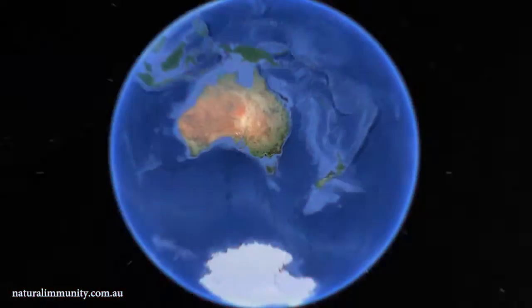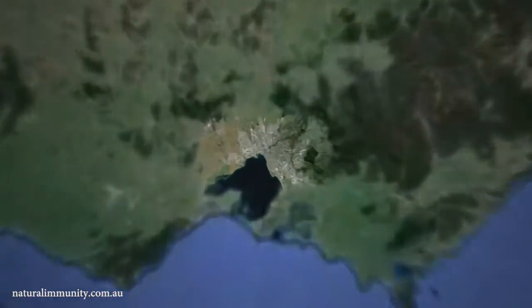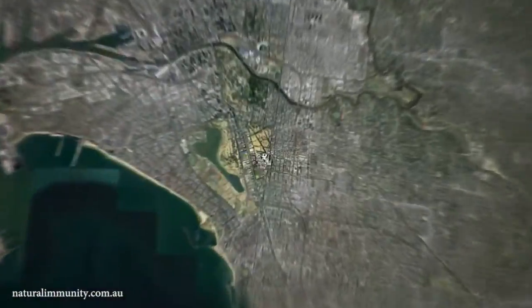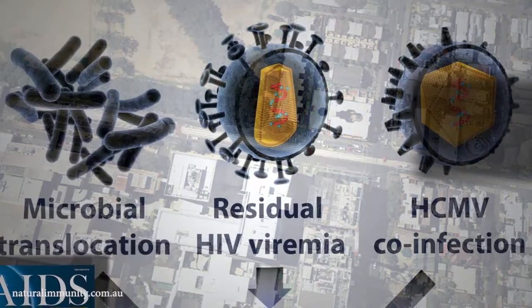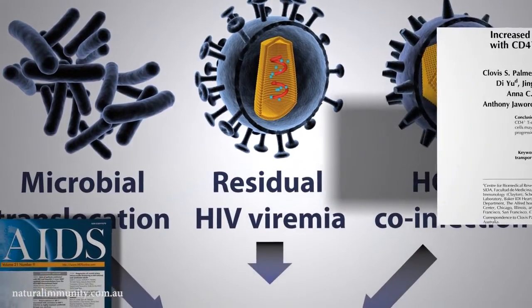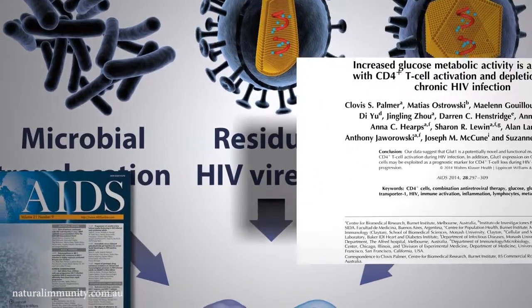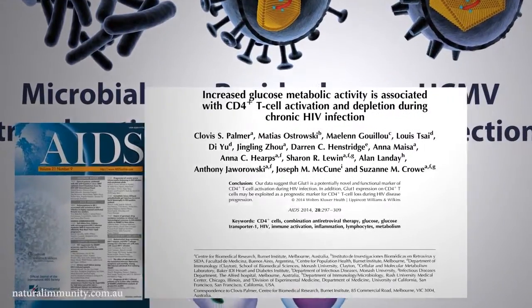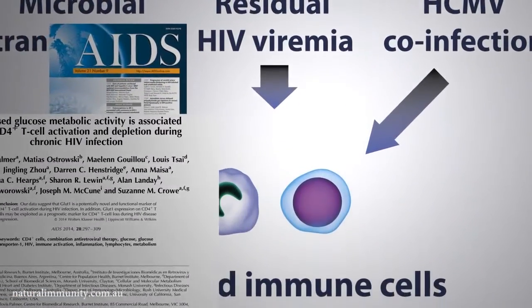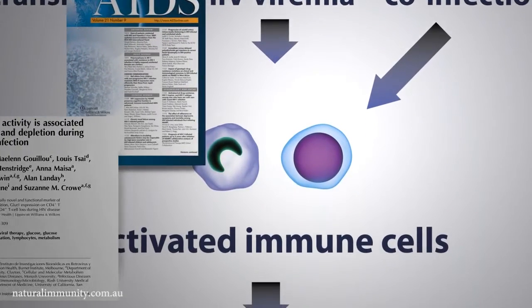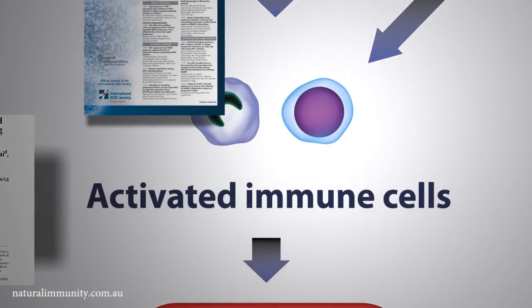But now, research conducted by scientists at the Burnett Institute in Melbourne, Australia, and published in the premier HIV-AIDS journal AIDS in 2014, shows for the first time that HIV infection not only disturbs the functions of CD4 T-Cells, but affects how these cells use energy.